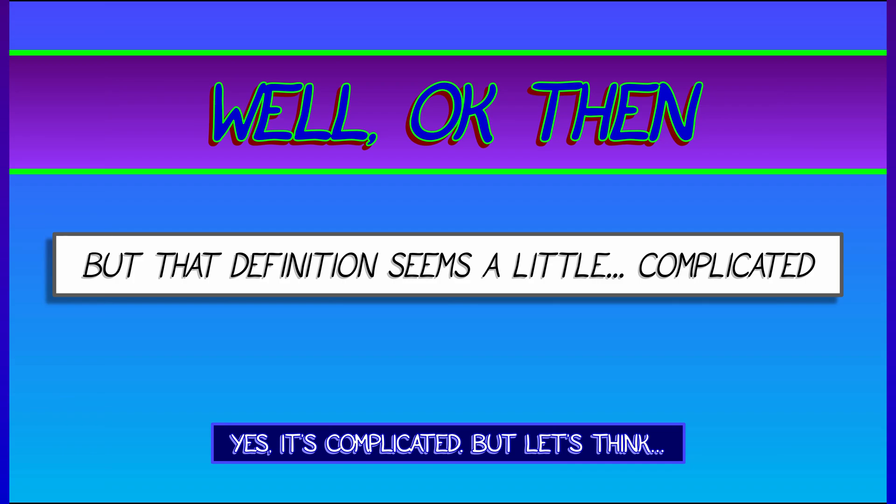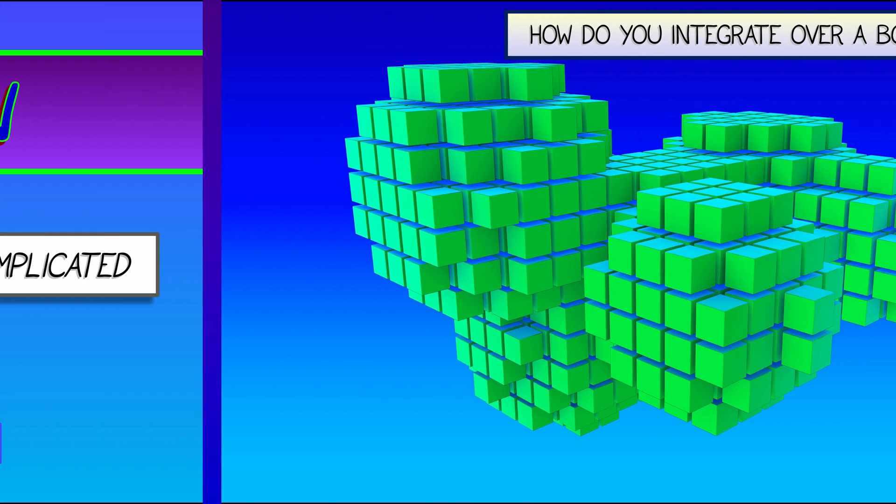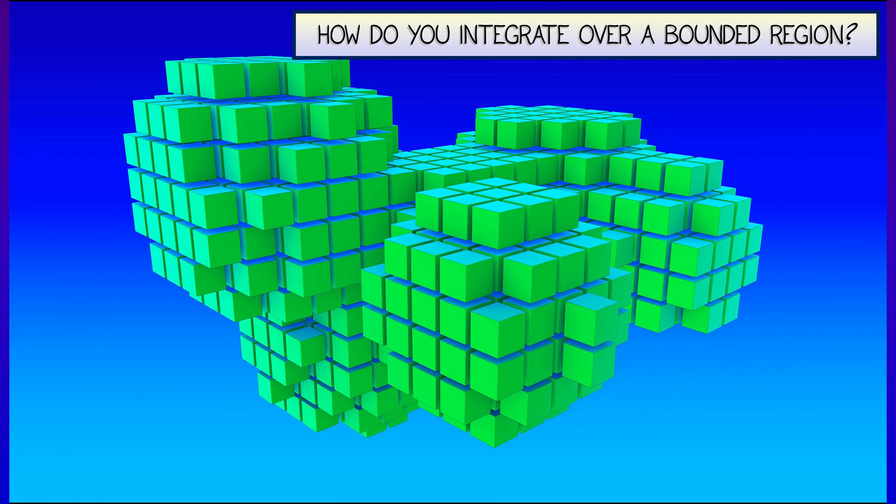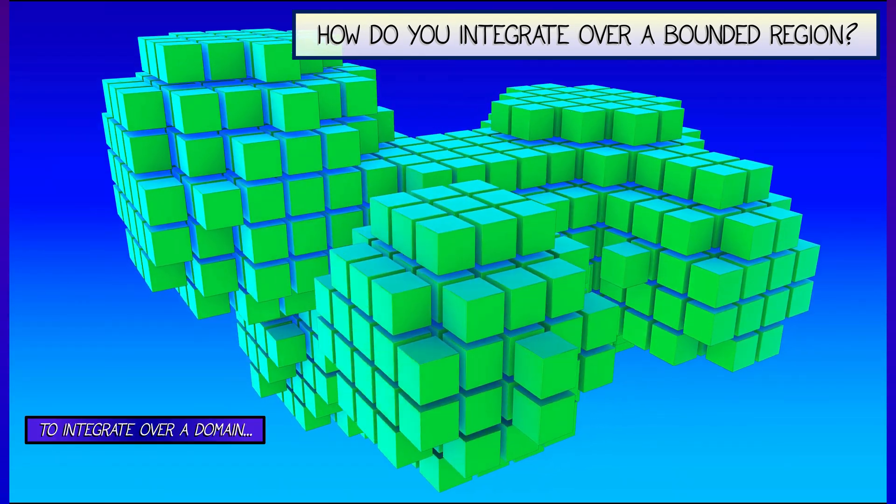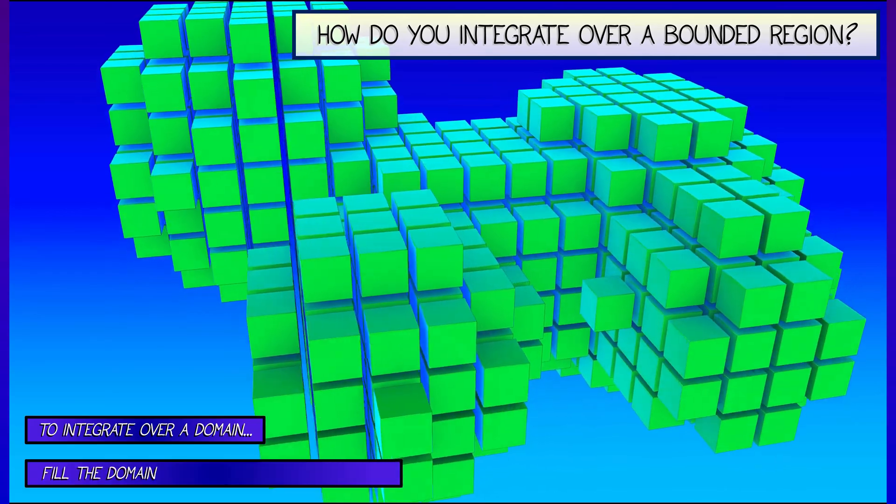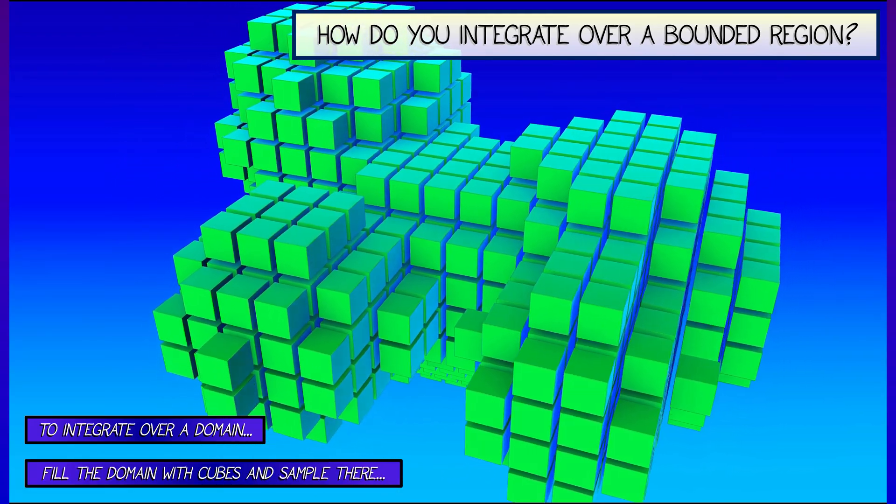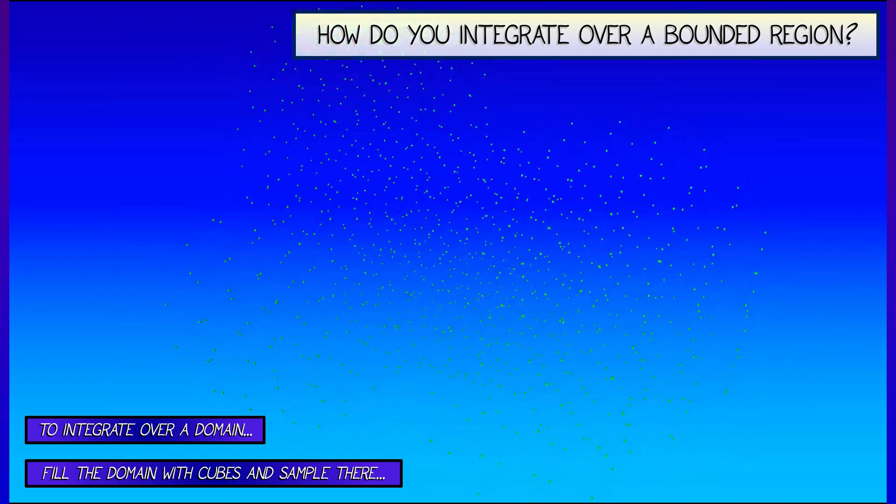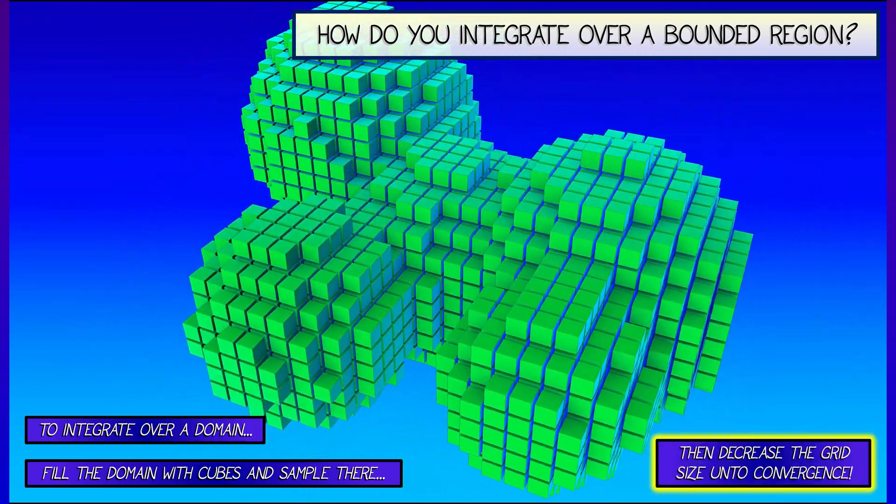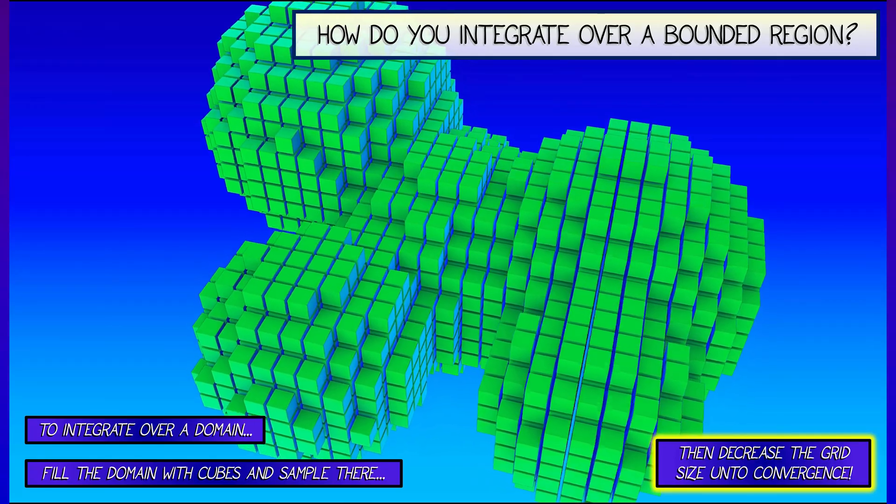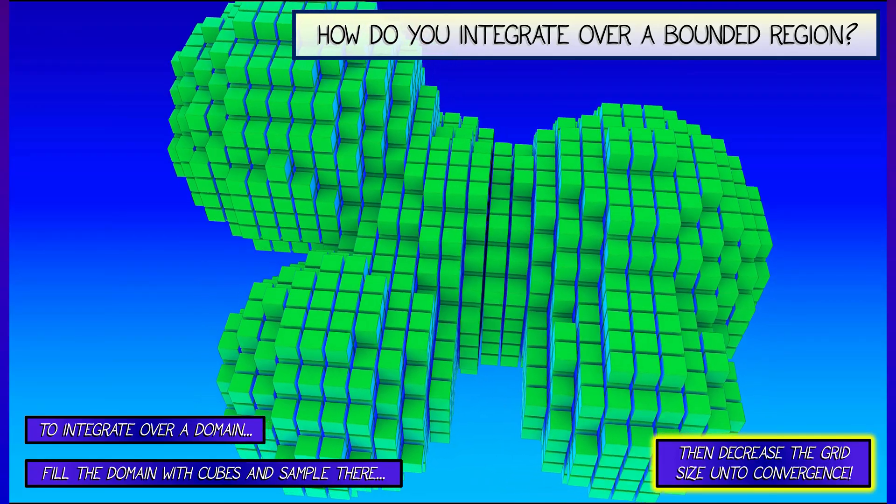One of the difficulties is that we're integrating over all of our n. How do we integrate over a bounded region? Well, this is not so bad. Given a nice domain, fill it up with cubes, and then just sample the points in those cubes. Add up all those values and then decrease the grid size so that you have a lot more cubes that are filling up that domain.